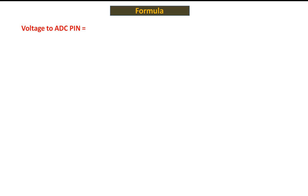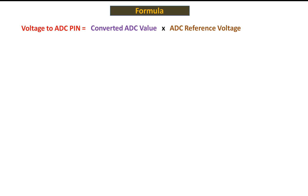Before we continue, let me first introduce you to the formula we are going to use. The voltage at the ADC pin — which is what we want to know — equals the converted ADC value, multiplied by the ADC reference voltage. Usually, whatever voltage you give to the microcontroller is automatically given to the ADC module as well.